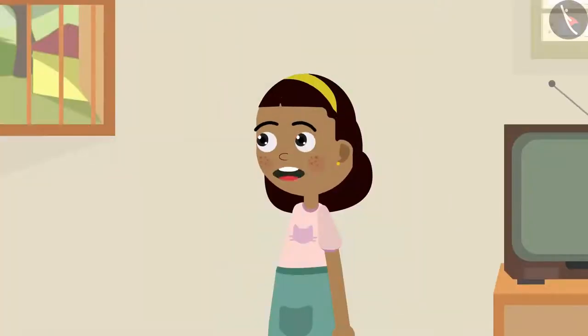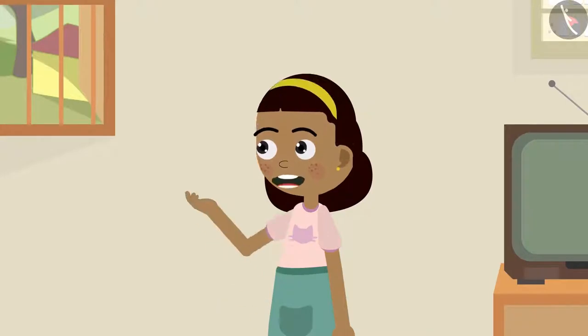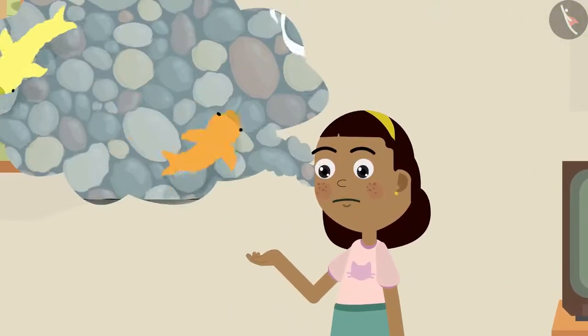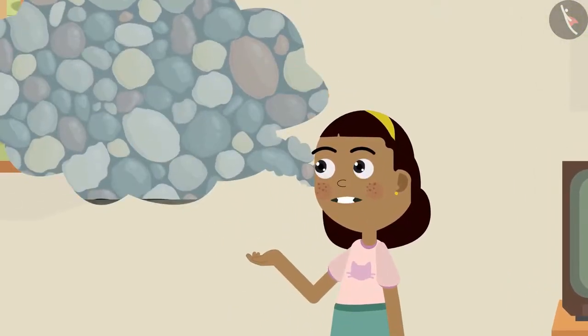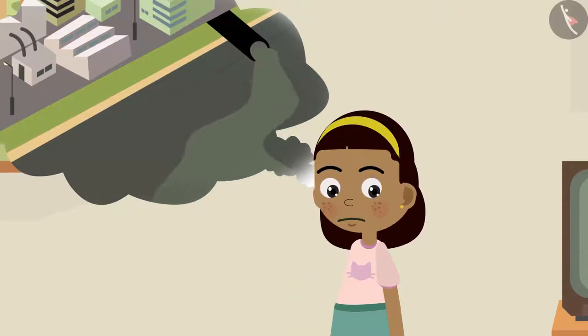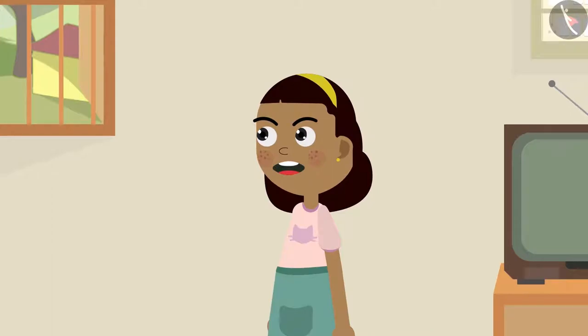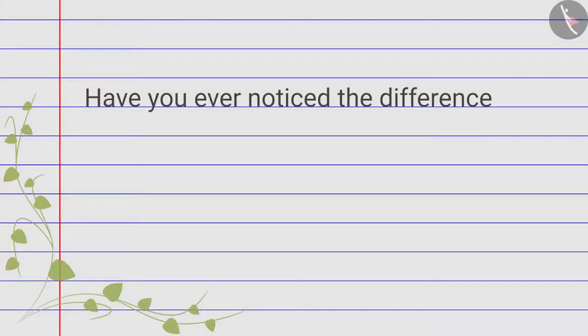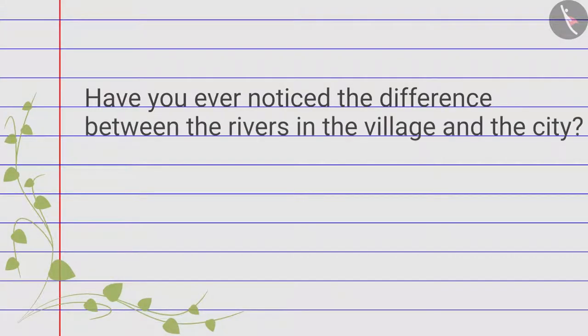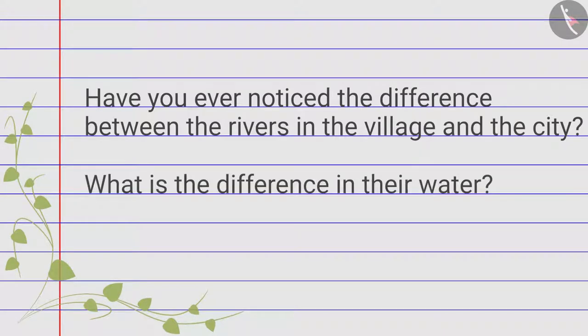What is that Ziya? Grandpa, the water in that river was so clear, but the river near my house in the city has very dirty water, looks just like mud. Why is that Grandpa? Have you ever noticed the difference between the rivers in the village and the city? What is the difference in their water?